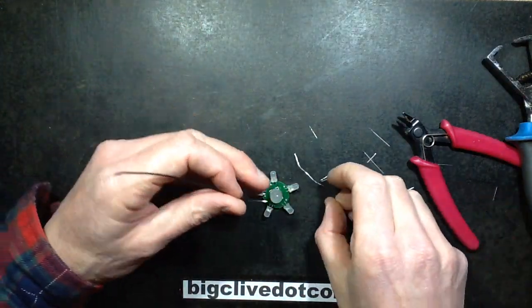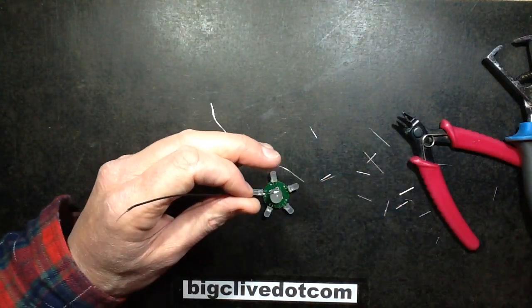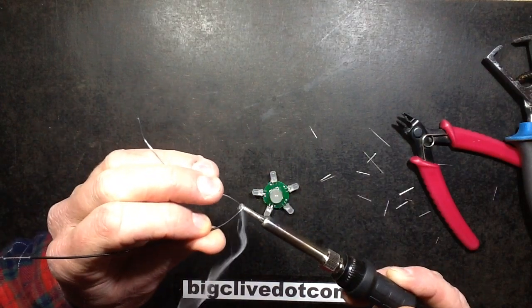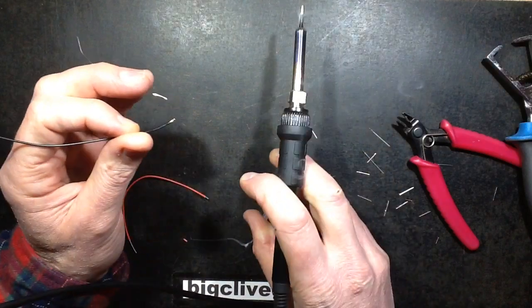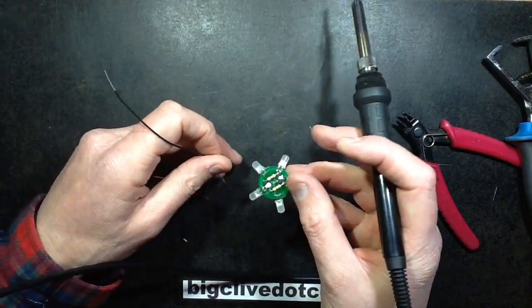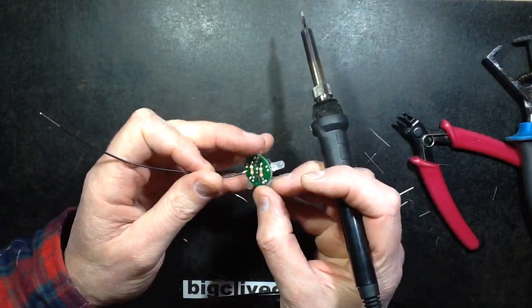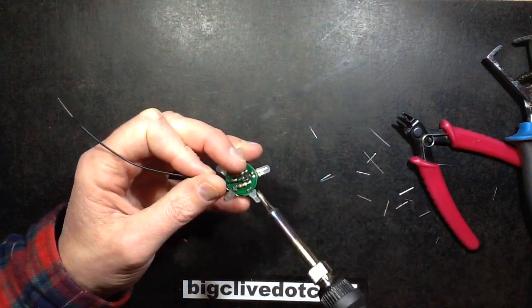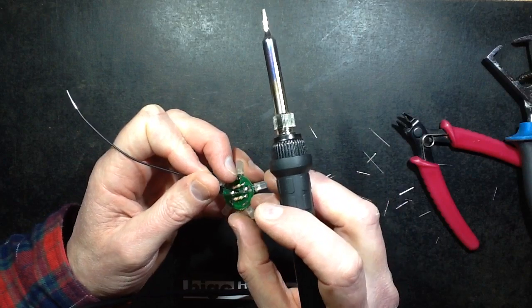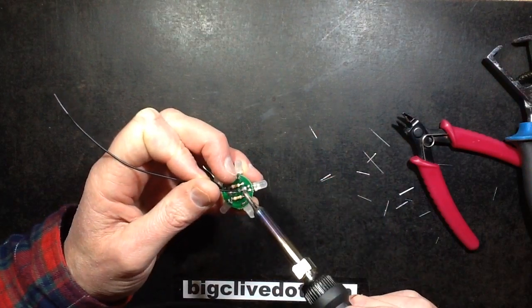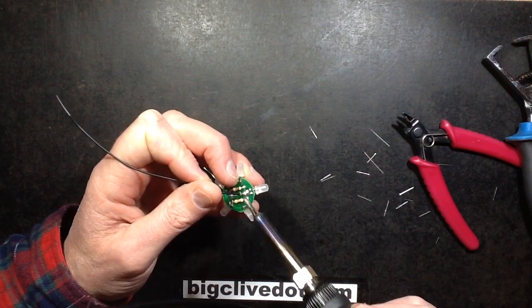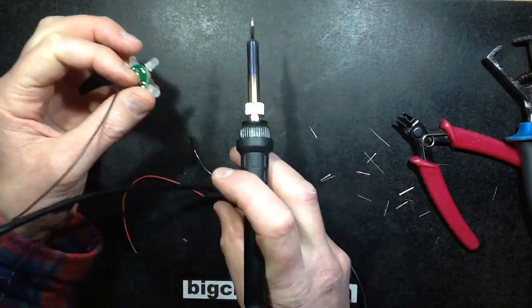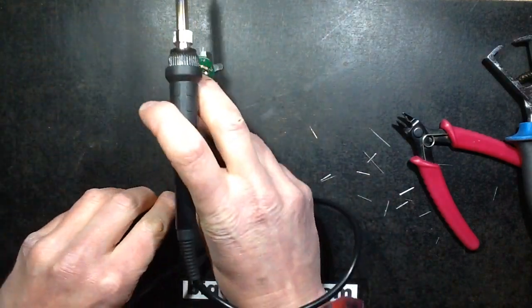I shall tin this wire, the negative, and put it onto the negative pad which is a good big generous pad. I'll put it on at a slight angle because I'm going to be twisting these wires together to make the stem. Looks pretty good. And the positive.